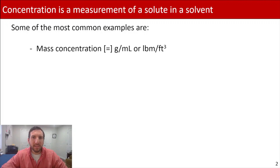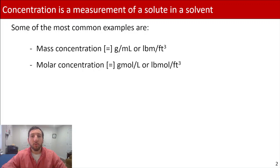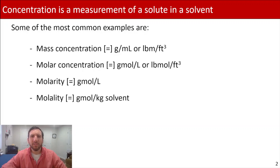We've got our mass concentration, which is usually represented in grams per milliliter or pound mass per foot cubed. We've got molar concentrations, which have units of gram mole per liter or pound moles per foot cubed. We've also got molarity, which is gram moles per liter. And we've got molality, which is a little less popular, but is represented in units of gram moles per kilogram solvent.